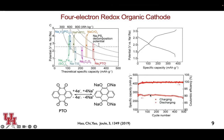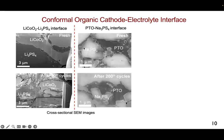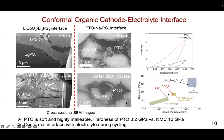We looked into the mechanism of why this performs better. Compared to inorganic materials, which develop cracks at the interface after a couple of cycles — requiring very high stacking pressure — we found that the organic phase maintains a much better interface even after 200 cycles. This relates to the mechanical properties of organic materials: they are highly malleable, with hardness of about 0.2 GPa compared to 0.10 GPa for NMC. Therefore they can deform and form a conformal interface even during cycling.